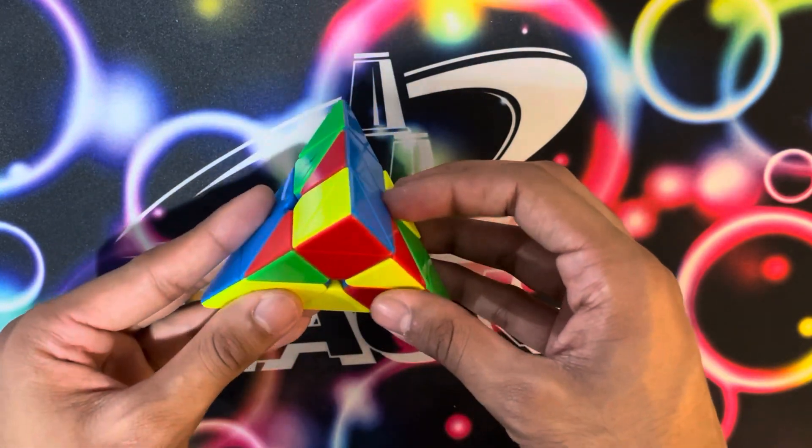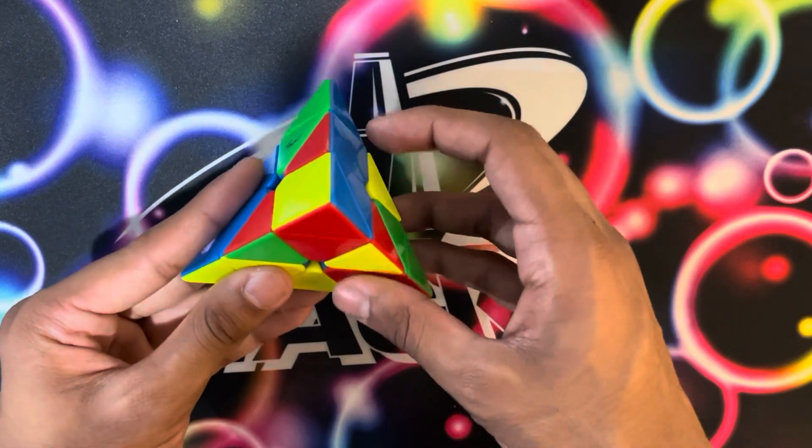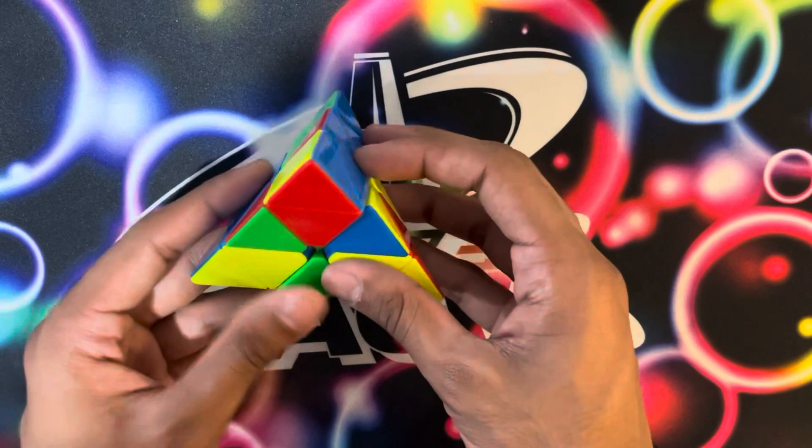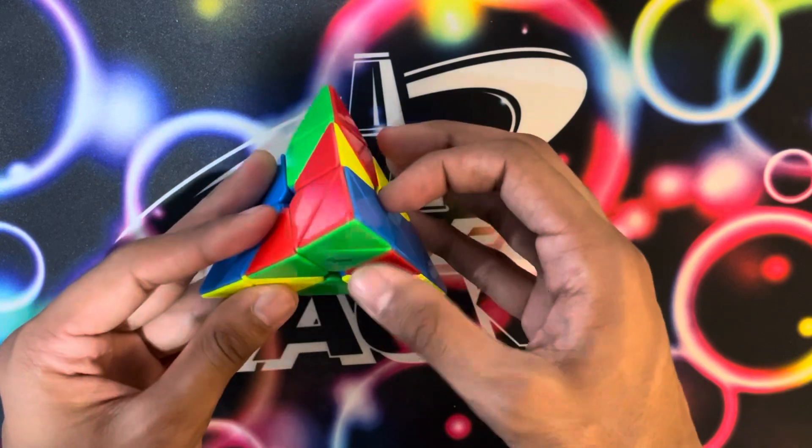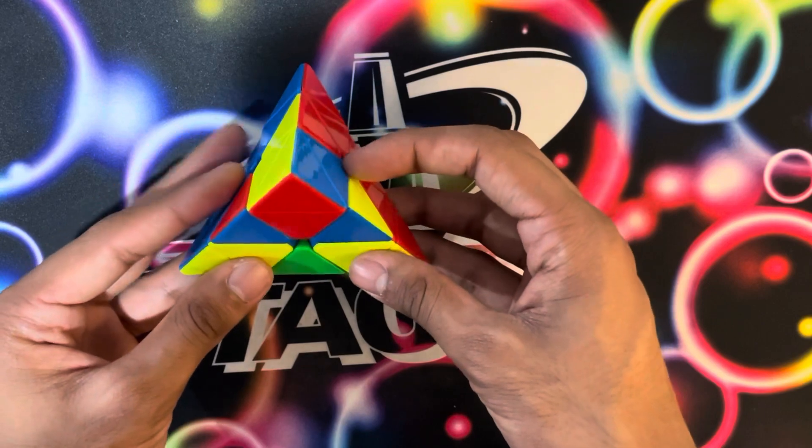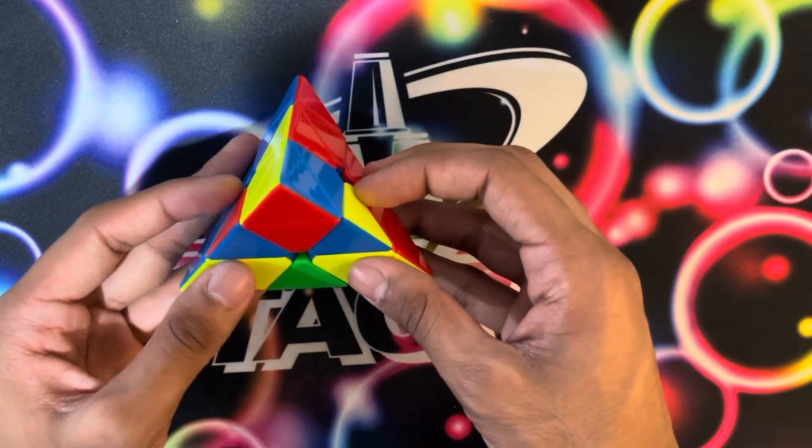And the way you can do that, like to finger trick it, is to use a B move again. And so you would do R, L', B, L, and then you just get L4E.